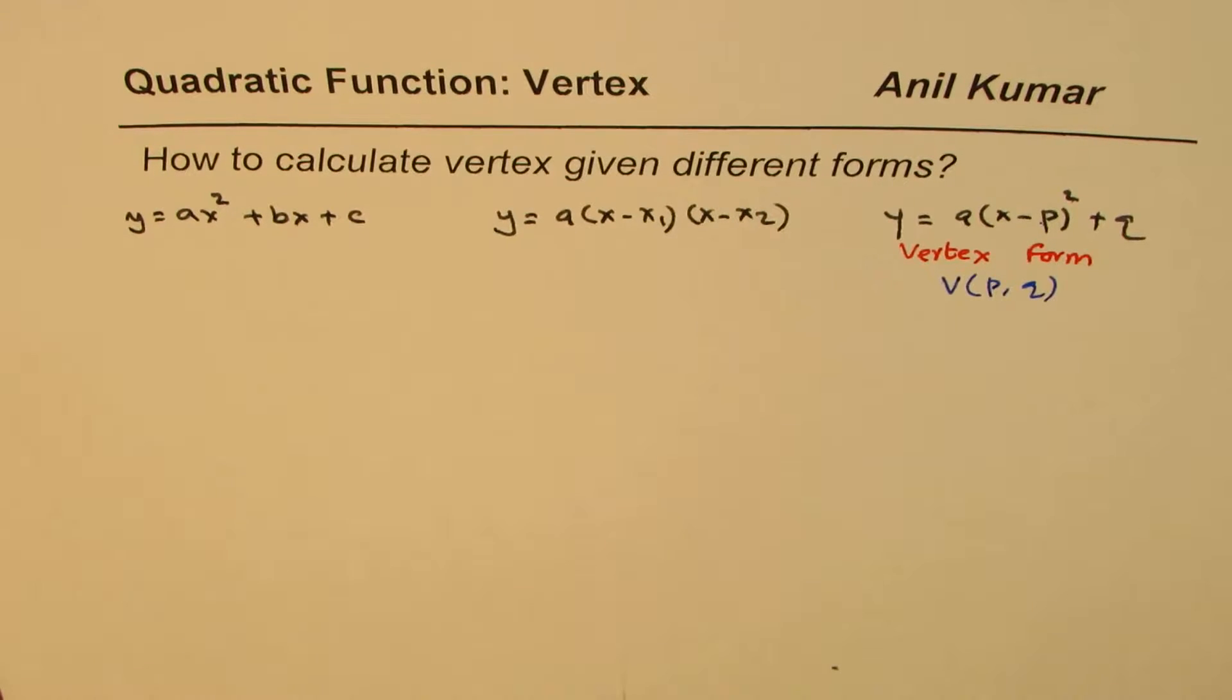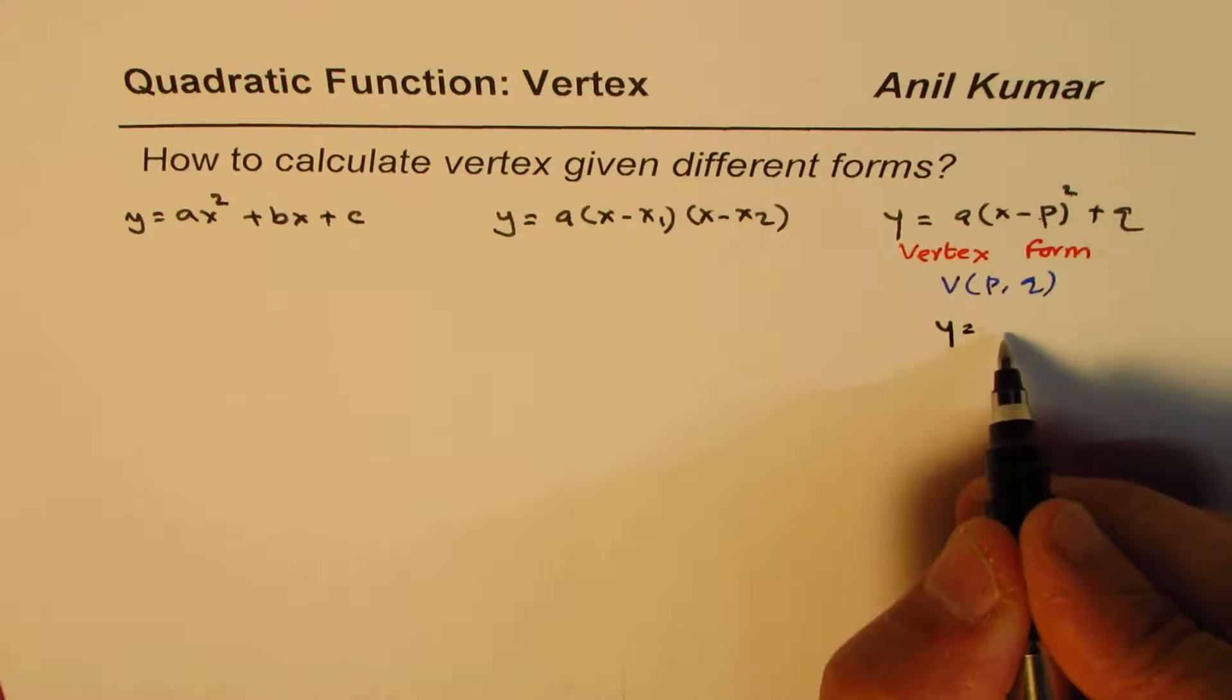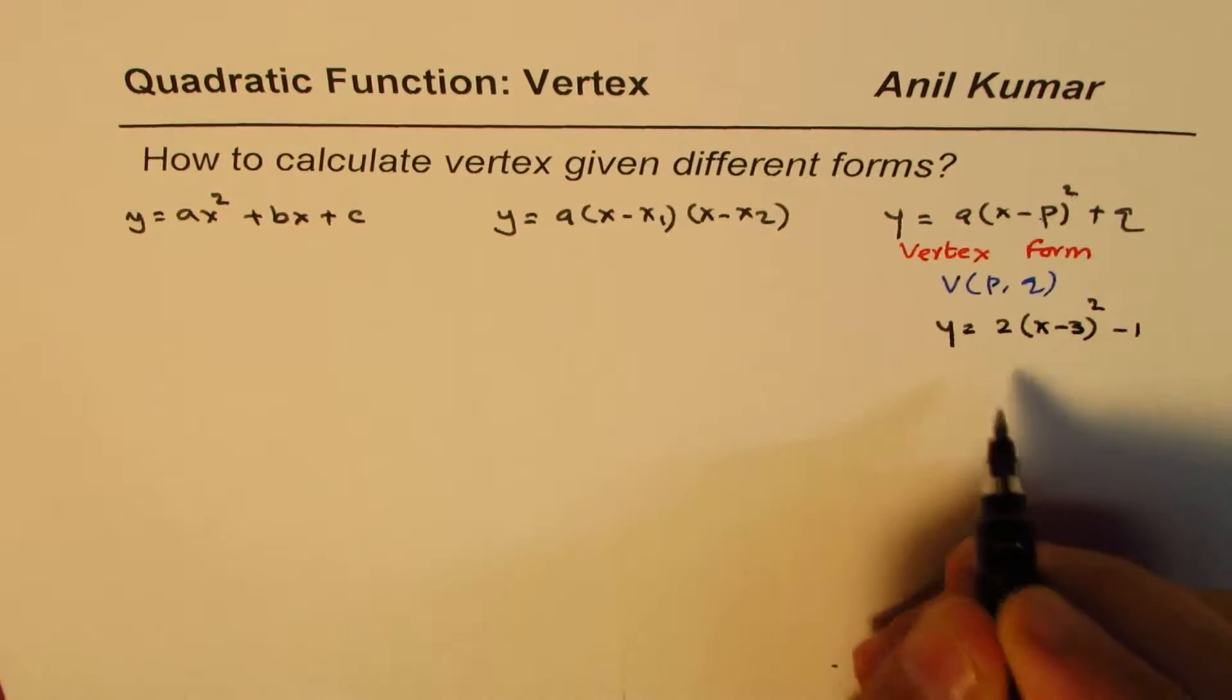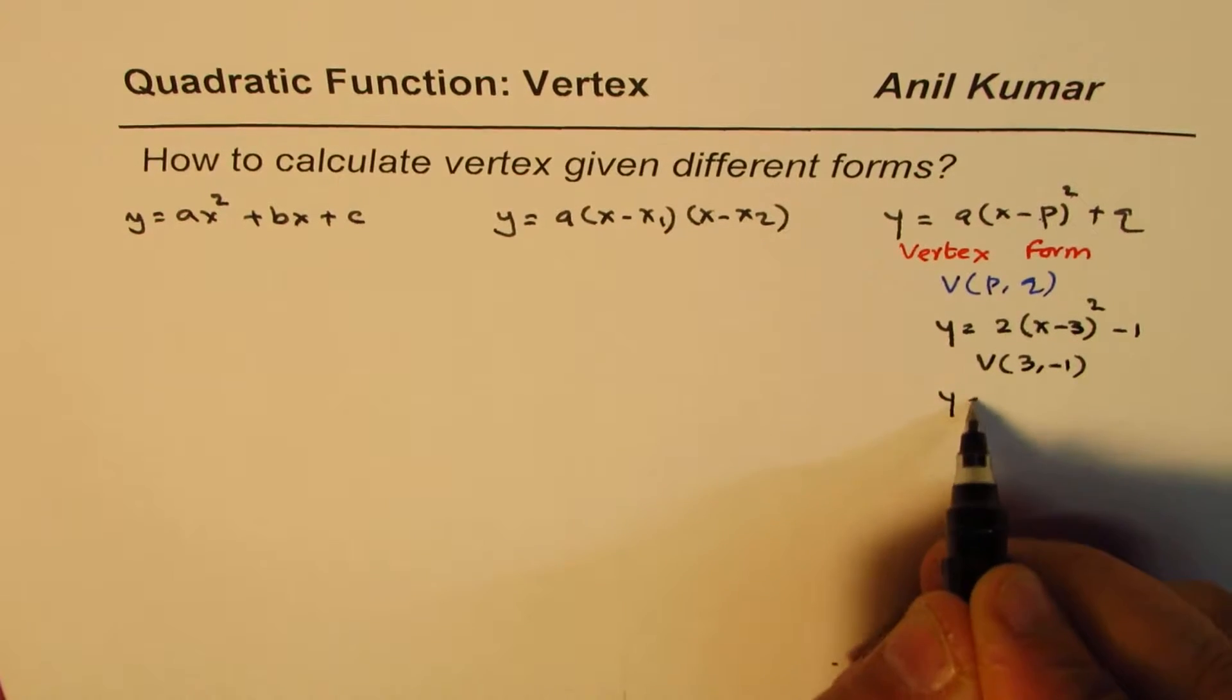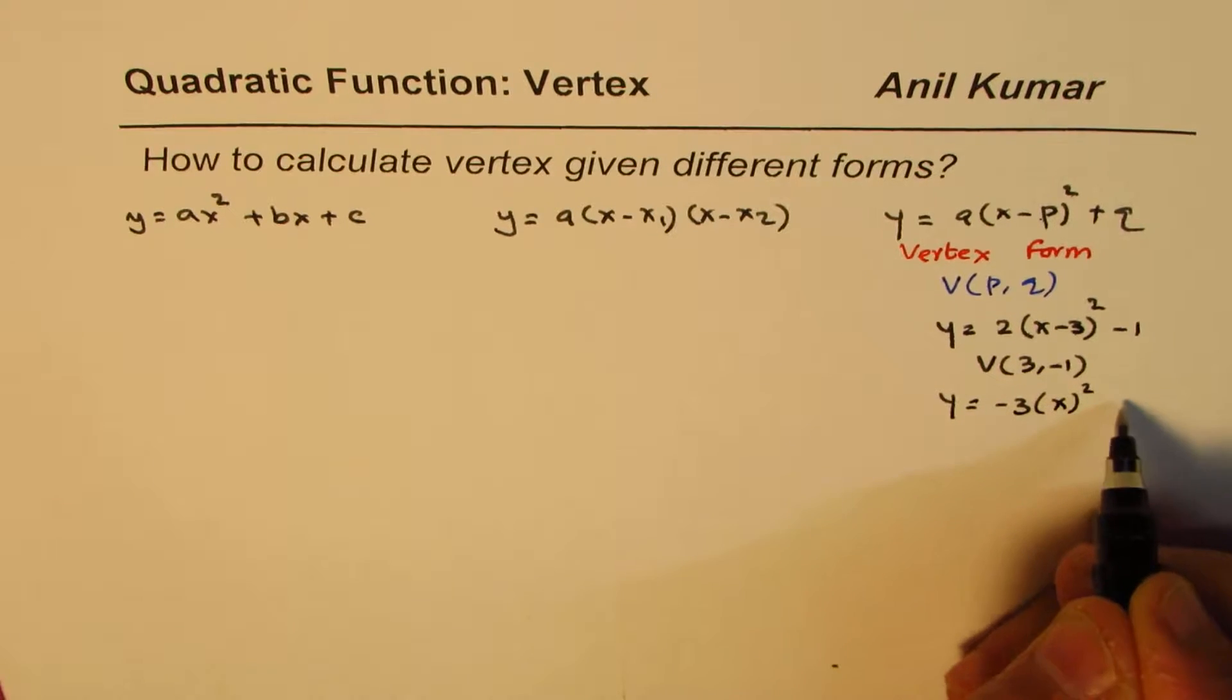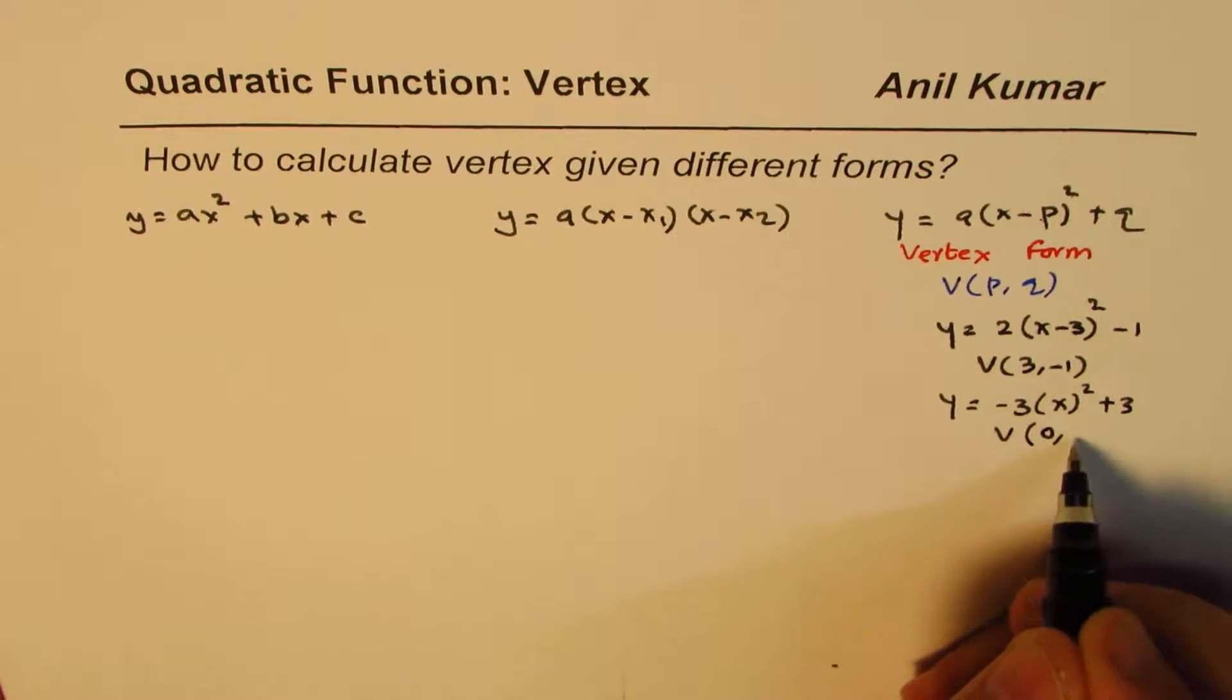So if I take a few examples here, let's say we have y equals 2(x minus 3)² minus 1. Vertex will be (3, minus 1). And if I have y equals minus 3x² plus 3, the vertex will be here it is minus 0, right? So the vertex would be (0, plus 3).